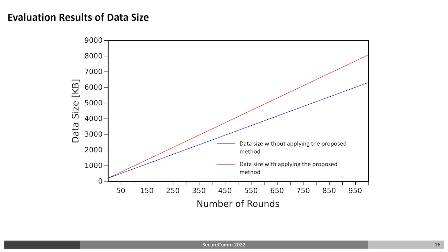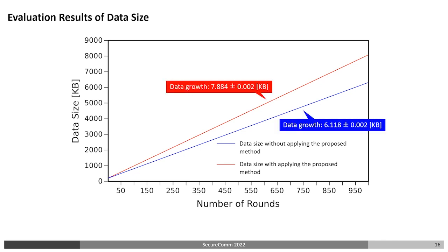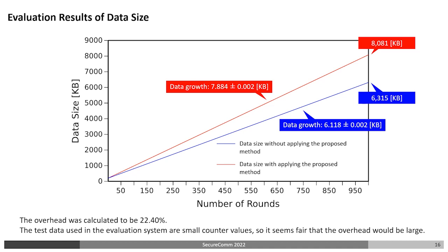The experimental results of the data size are shown in the following graph. The horizontal axis represents the number of trials up to 1000, and the vertical axis represents the data size. The blue line shows the data size without the proposed method, and the red line shows the data size with the proposed method. Both data sizes increased linearly, indicating they were affected simply by the amount of data added by the proposed method. The data growth is about 7.884 KB and 6.118 KB respectively, and the data size for 1000 experiments is 1881 KB and 6315 KB respectively. The overhead was calculated to be 22.4%. The test data used are small counter values, so a larger overhead seems fair.